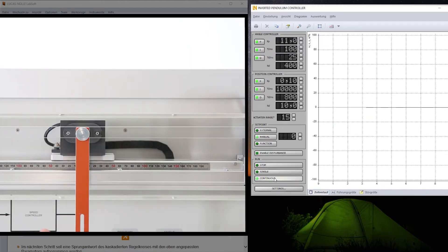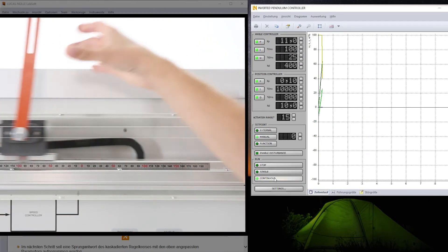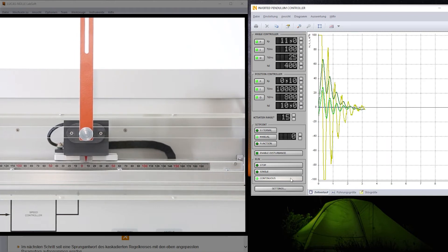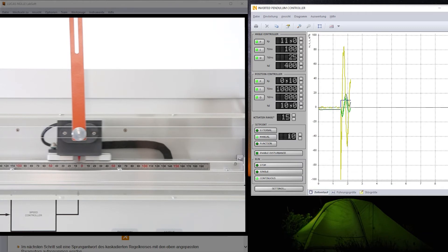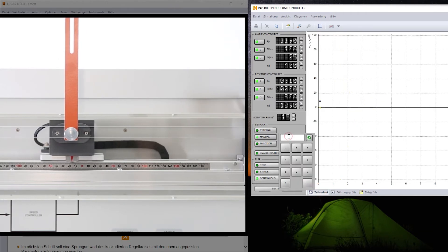After that, a cascade control loop is designed with two PID controllers. This permits closed-loop position control of the carriage and automatic angle control of the pendulum rod at the same time.